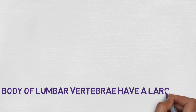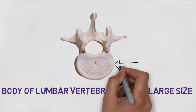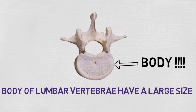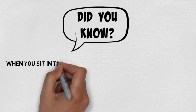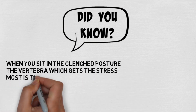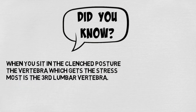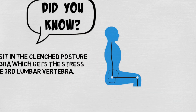Next we have the point about the body of the lumbar vertebrae — the body has a large size. Let's see it in the figure. So this is the large body size as you can see. Did you know, when you sit in a clenched posture, the vertebra which gets the most stress is the third lumbar vertebra? So yeah, you should sit straight.